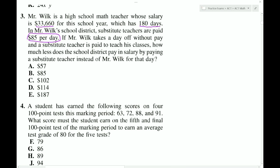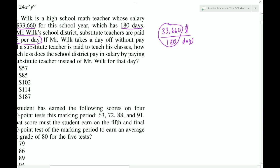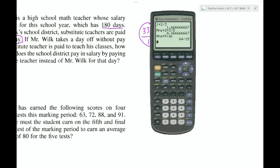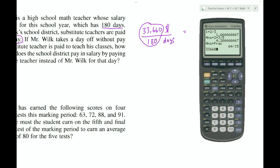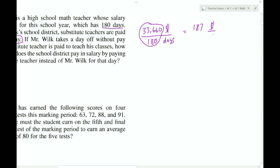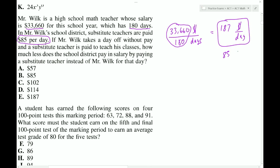So we want to see how much Mr. Wilk makes each day. So if he makes $33,660 in 180 days, we can then combine these numbers together to get how many dollars per day he makes. So let's grab our calculator and we'll go 33,660 divided by 180 and that gives 187. So he makes $187 per day. And we have to compare that to the substitute teacher who makes $85 per day. And the idea here is we're going to subtract these numbers and I get $102 per day. That's how much the school is going to save by using a substitute teacher instead of the real teacher.